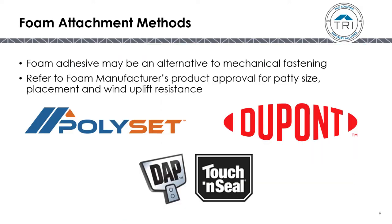Before proceeding, I'd like to spend a minute on foam attachment methods. Foam attachment may be an alternative to mechanical fastening. These listings are not in the FRSA TRI 6th Edition but rather in the foam manufacturer's product approval. You'll have to look at their patty sizes, their placement, and their uplift resistance, and compare those to your design pressures using that foam manufacturer's product approval.